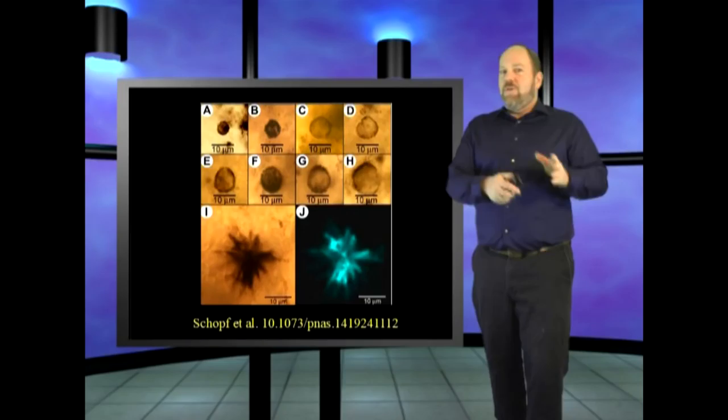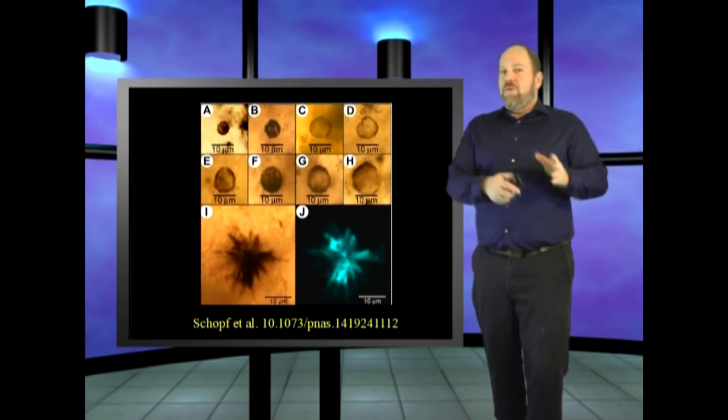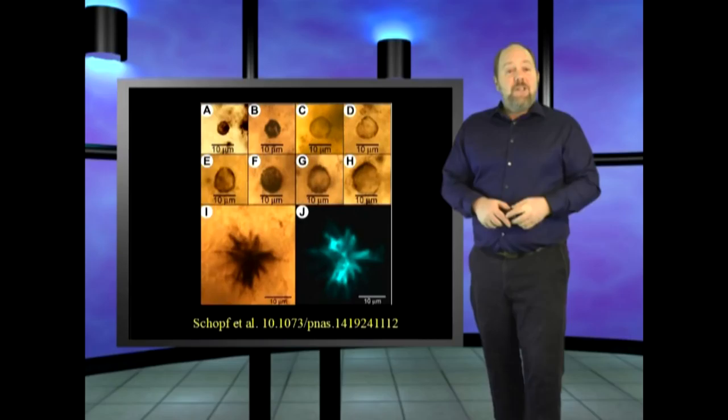Right, so as you can see here, if organisms change over time, it's deemed proof of evolution. If organisms don't change over time, even if that time is 2.3 billion years, it's still proof of evolution.